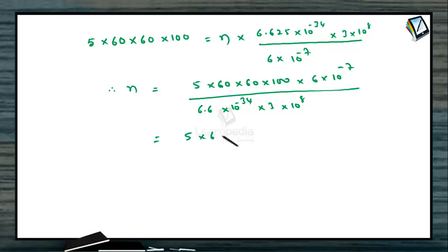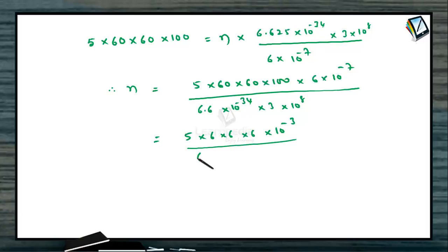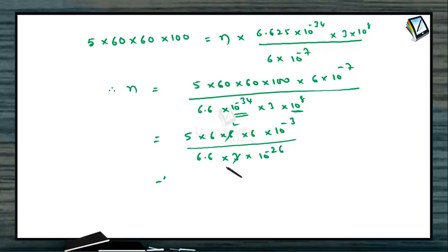Indirectly we have 5 × 6 × 6 × 6, giving 10⁴ × 10⁻⁷ = 10⁻³, multiplied by 6 × 10⁻³, divided by 6.6 × 3 × 10⁻³⁴⁺⁸. The exponent simplifies to 10⁻²⁶, and the number approximately comes out as 2 times and 3.3 times, giving 6 × 6 × 5 divided by 3.3 × 10²³.